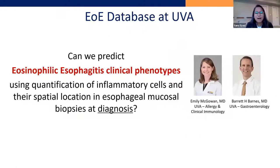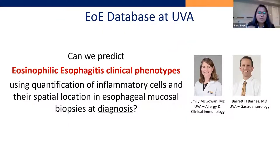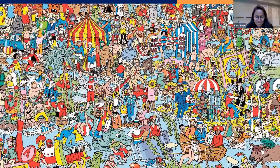The power of AI is truly applicable when you apply it to large databases. We have an eosinophilic esophagitis database clinical cohort led by Emily McGowan and Barrett Barnes. Our question was: can we predict EOE clinical phenotypes using quantification of inflammatory cells? I'm going to talk about Where's Waldo as an example — this is also my break slide so you can take a little step back and breathe.